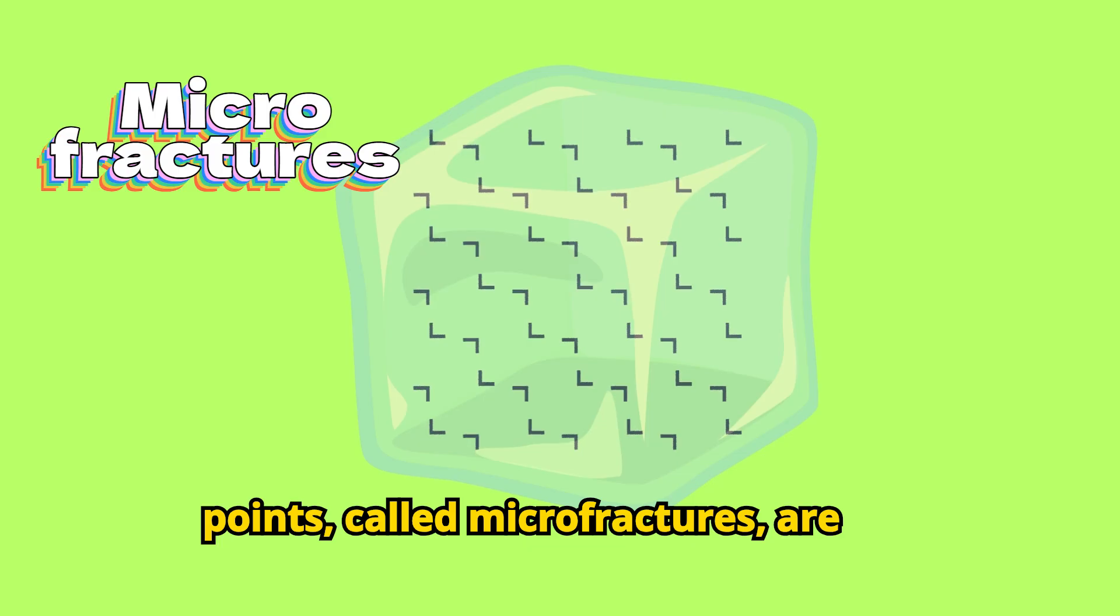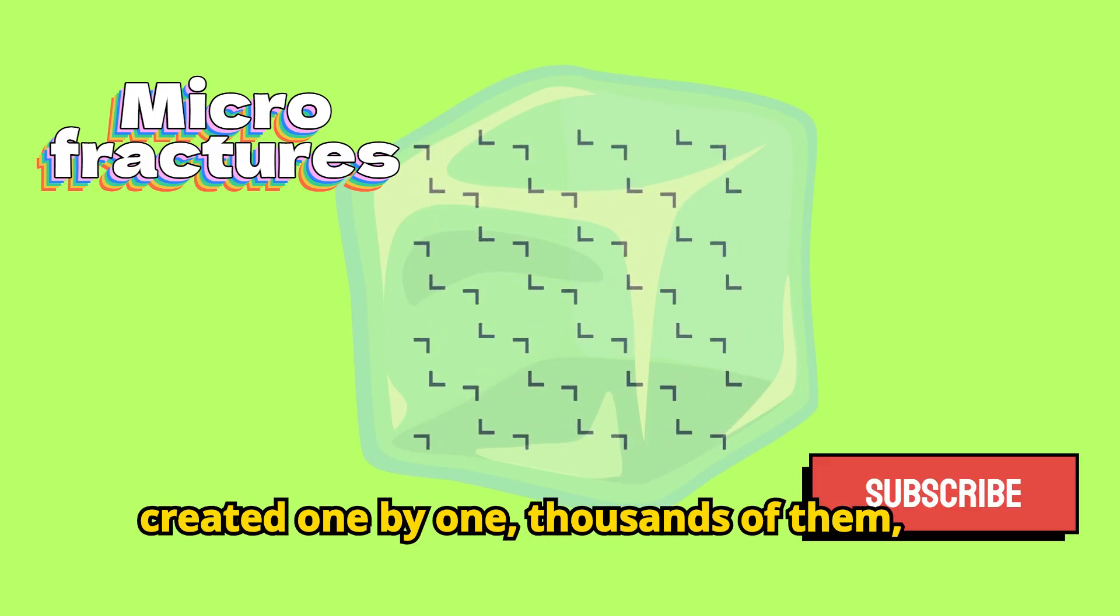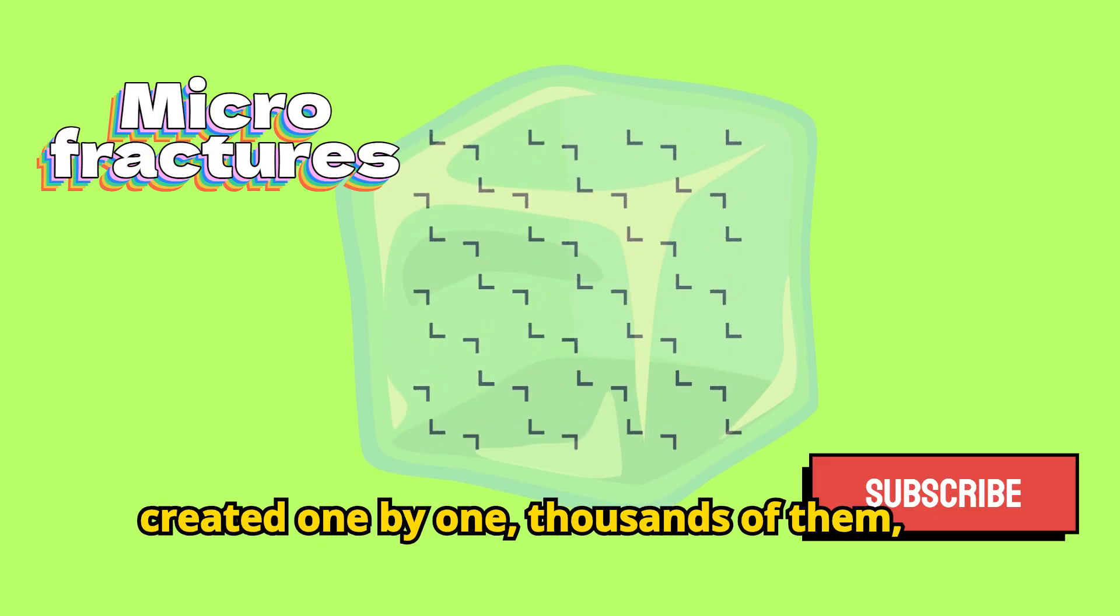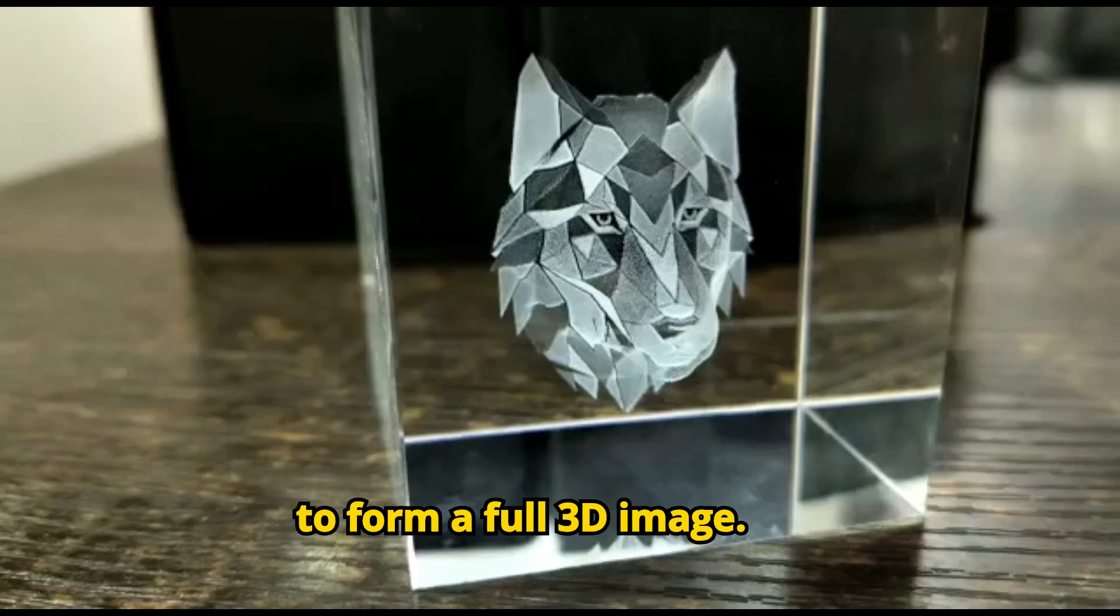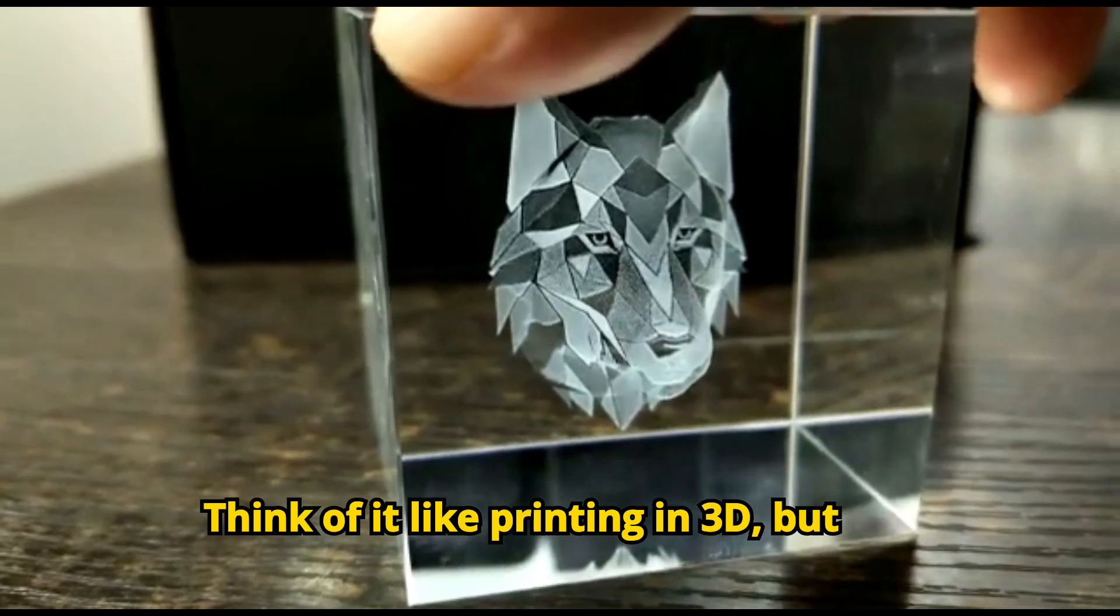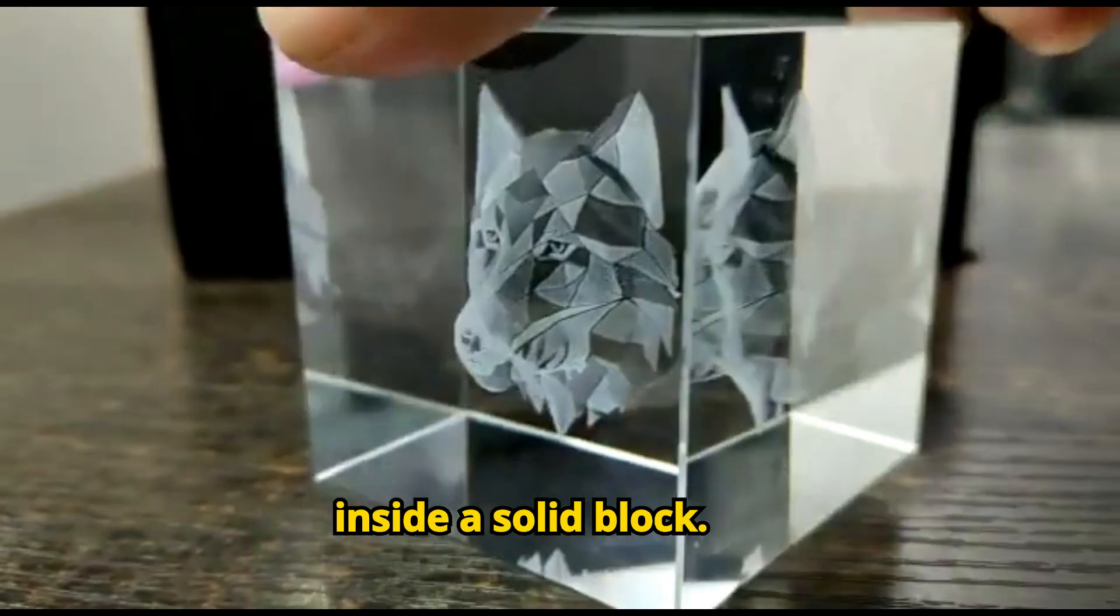These tiny points, called microfractures, are created one by one, thousands of them, to form a full 3D image. Think of it like printing in 3D, but inside a solid block.